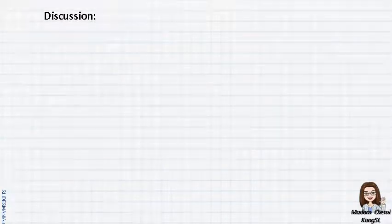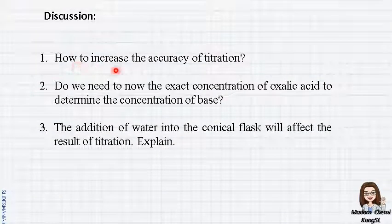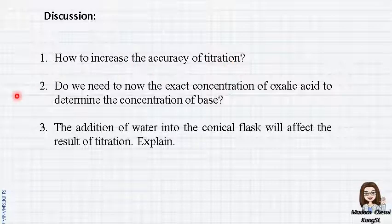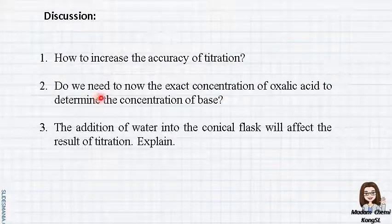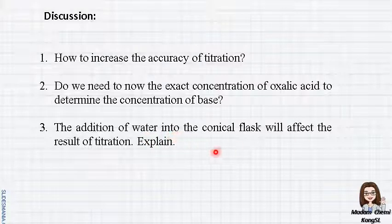For the discussion part, you just need to answer these questions. First, how to increase the accuracy of titration? Second, do we need to know the exact concentration of oxalic acid to determine the concentration of the base? Another question: does the addition of water into the conical flask affect the result of titration? Yes or no? Then explain.